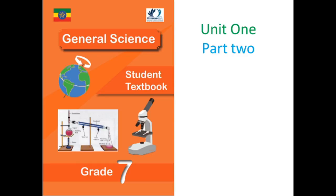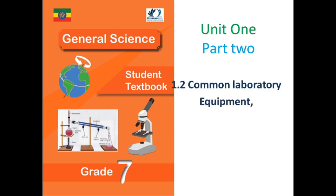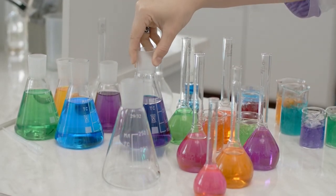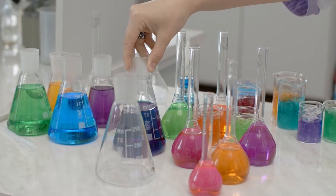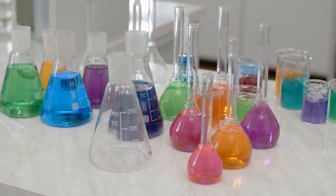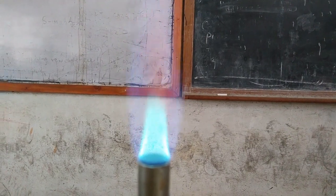Welcome to this tutorial. This is General Science for Grade 7, Unit One, Part Two. In Part One we covered indigenous and conventional science. Here we are going to discover common laboratory equipment, their uses, safety rules, and procedures. At the end of this topic, students will be able to identify different laboratory tools such as balance, tongs, Bunsen burner, test tube, and petri dish, and describe their uses.